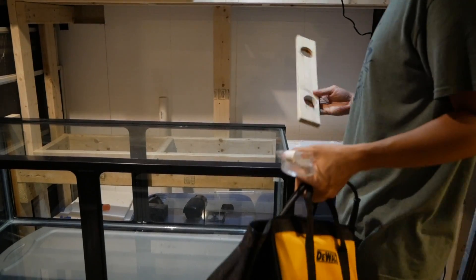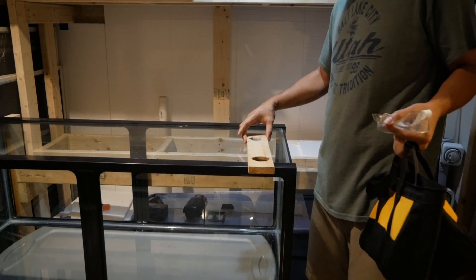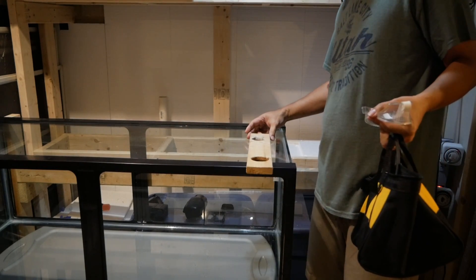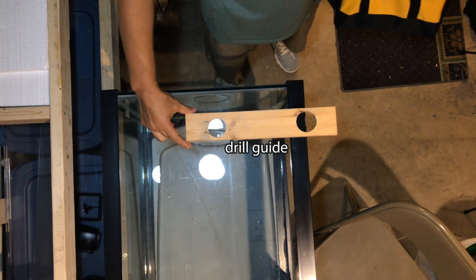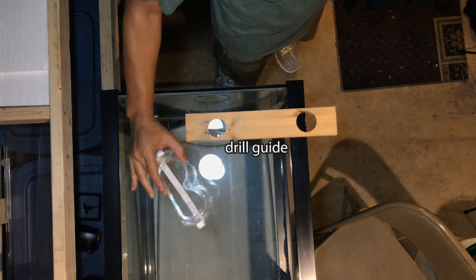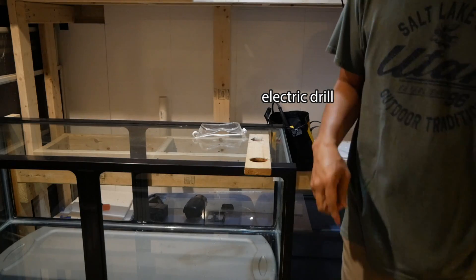I decided to put the overflow on the back right edge. Here I'm placing the drill guide, a piece of wood with a hole cut out into it. It's about an inch and three quarters.